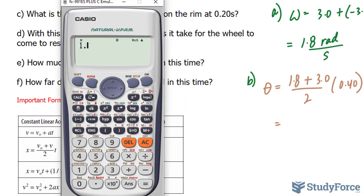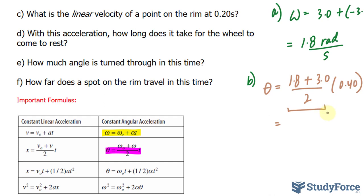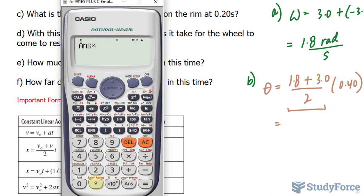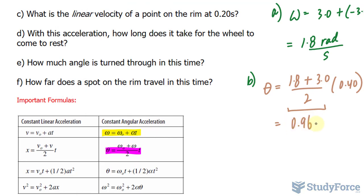So, 1.8 plus 3 divided by 2, that takes care of this part, multiply 2.4 and that gives us a value of 0.96 radians. We found the answers to A and B, let's move on to C.